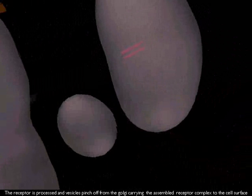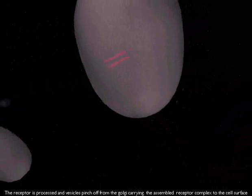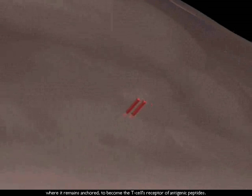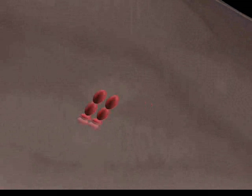The receptor is processed and vesicles pinch off from the Golgi carrying the assembled receptor complex to the cell surface, where it remains anchored to become the T-cell's receptor of antigenic peptides.